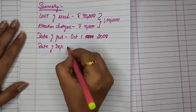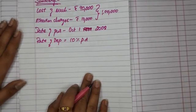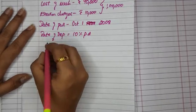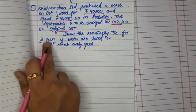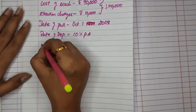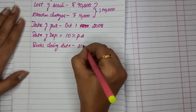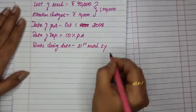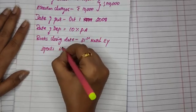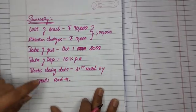Rate of depreciation is 10% per annum. So now what we need to do — show the machinery account for 3 years. Books are closed on 31st March every year. This is the sum, so using this we will prepare the machinery account for 3 years.